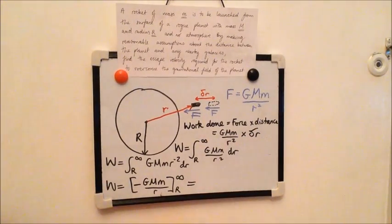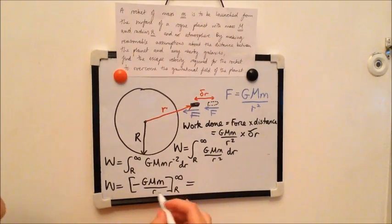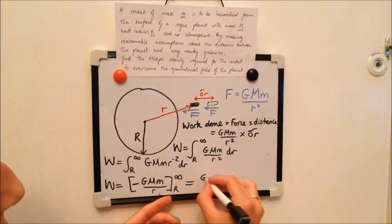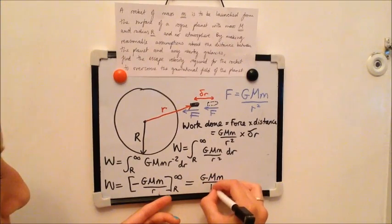Now this when you put the limits in, the first limit that you put in is infinity. Obviously dividing by infinity is just going to give you zero. And then the next step is you're doing minus, and then inserting large R, and so you'll end up with a minus minus big G big M little m over big R.